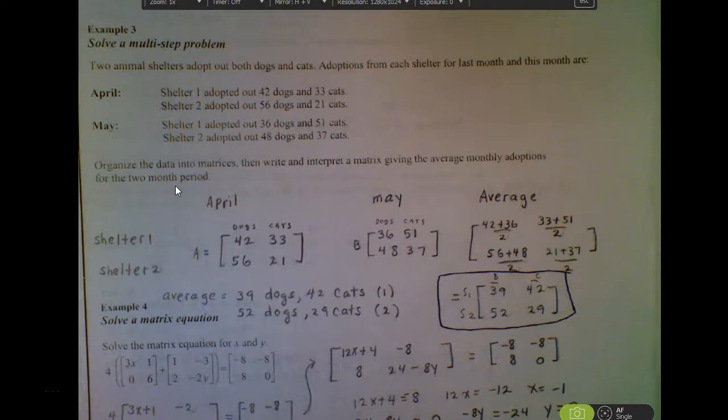We were specifically being asked what is the average monthly adoption for a two month period. Remember what finding an average looks like. It just means you're going to add up the parts and then divide by the number of terms. If I sort of take out all the words and just leave the numbers, here's what we have. For April, shelter one had this many dogs and cats. Shelter two had this many dogs and cats. So we organized that one for the month of April. Same information for the month of May.